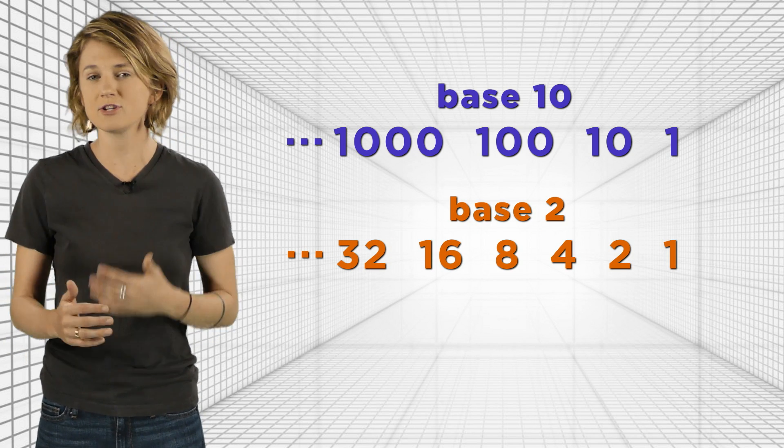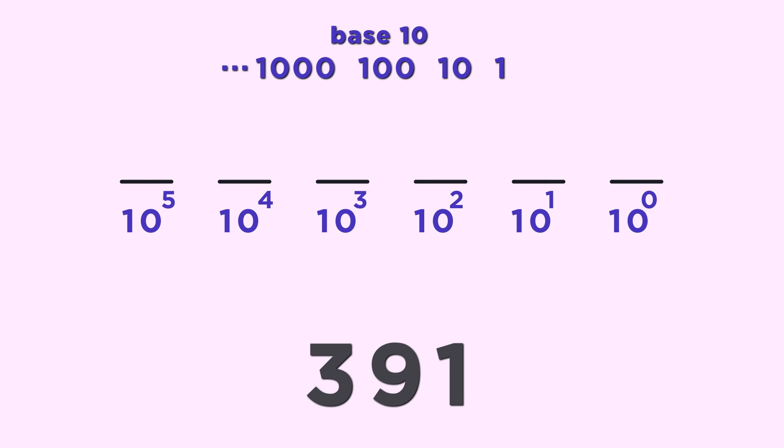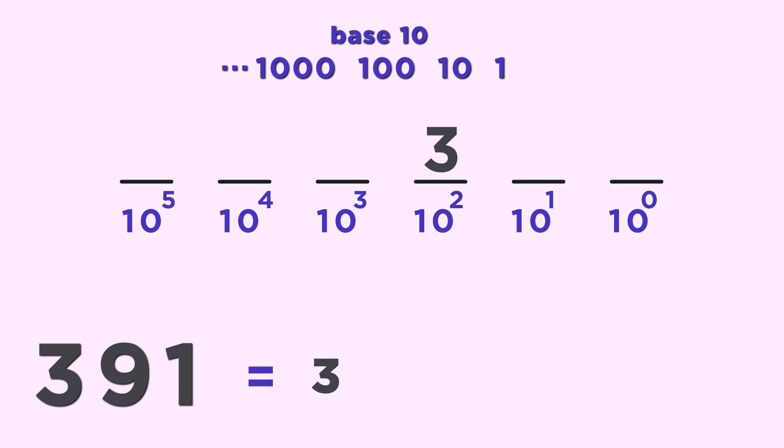When we write 391 in base 10, it means 3 times 10 squared plus 9 times 10 to the 1st plus 1 times 10 to the 0.